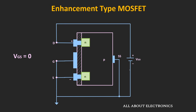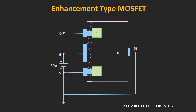So whenever Vgs is zero, the MOSFET will remain in the OFF condition. Now let's see what happens when we apply a positive value of Vgs. The substrate and source terminals are connected together and connected to the ground terminal, and the positive voltage is applied between the gate and source terminal. For now let us assume that Vds is equal to zero.